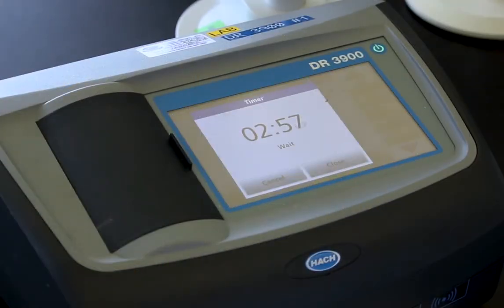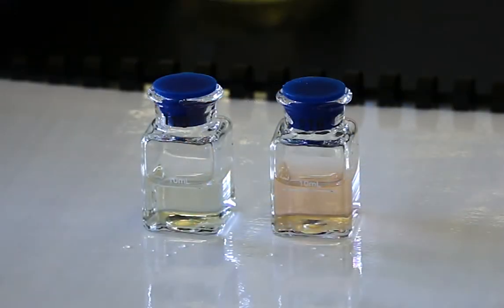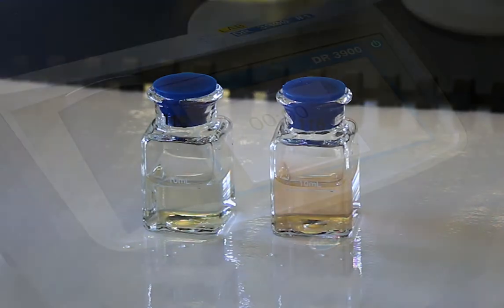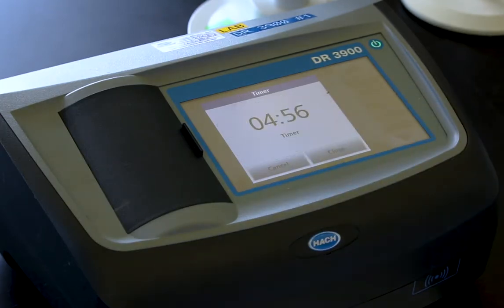Start a timer for 3 minutes of reaction time. An orange colour will develop if iron is present in the sample water. If the sample contains visible rust, add 5 minutes to the total reaction time.